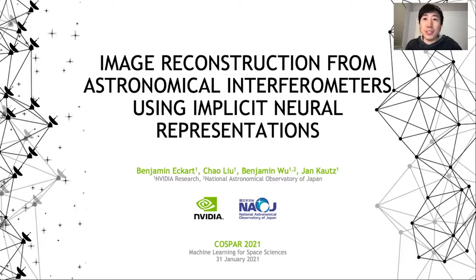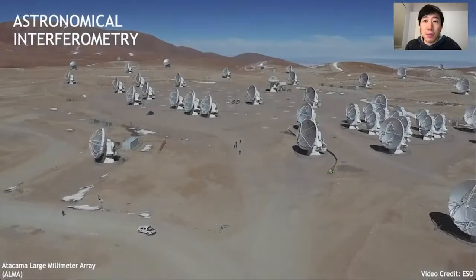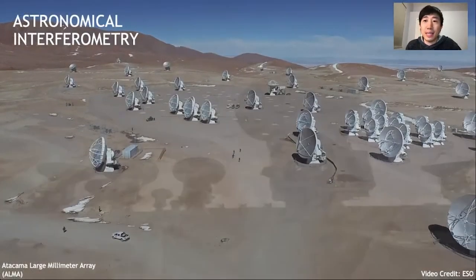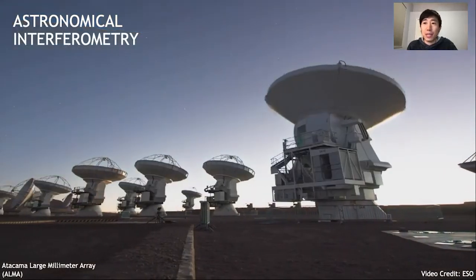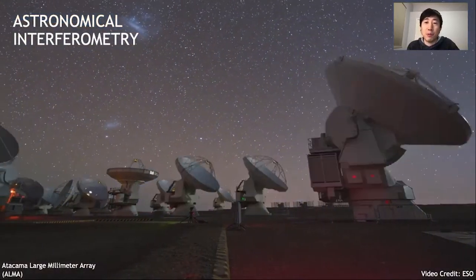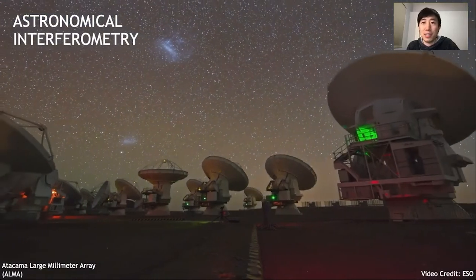Image reconstruction from astronomical interferometers using implicit neural representations. Astronomical interferometry is a technique in which a group of telescopes can all work together to approximate one single much larger telescope.